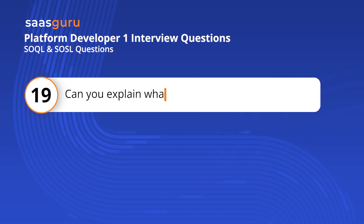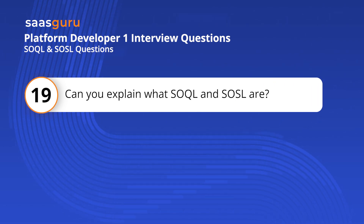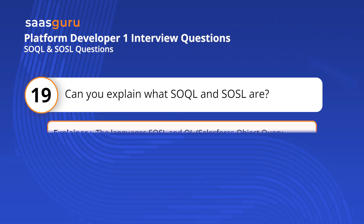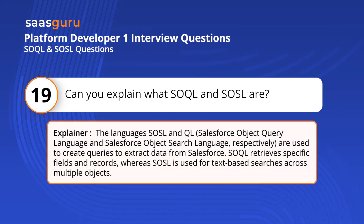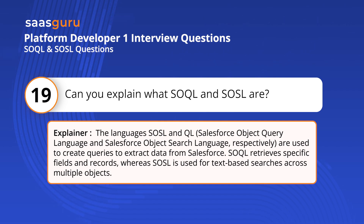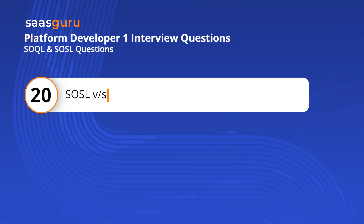Question 19: Can you explain what SOQL and SOSL are? SOQL (Salesforce Object Query Language) and SOSL (Salesforce Object Search Language) are used to create queries to extract data from Salesforce. SOQL retrieves specific fields and records, whereas SOSL is used for text-based searches across multiple objects.